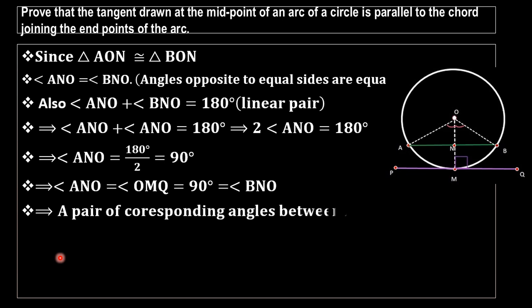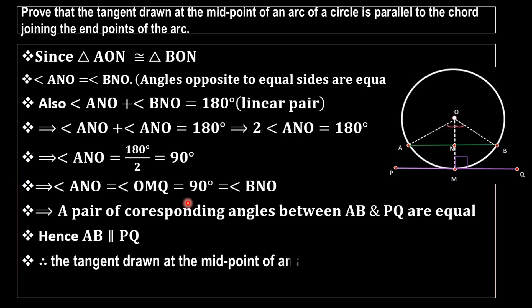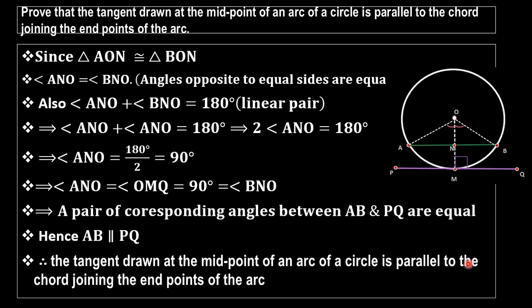A pair of corresponding angles between AB and PQ are equal, since AB and PQ are two lines with ON as the transversal. These corresponding angles being equal means AB is parallel to PQ. This is our required result — the tangent drawn at the midpoint of an arc of a circle is parallel to the chord joining the endpoints of the arc.